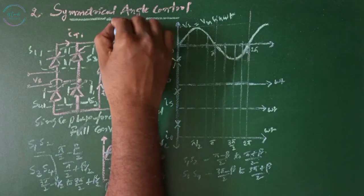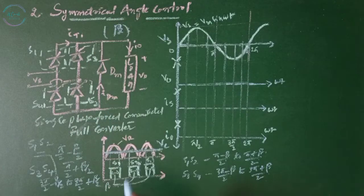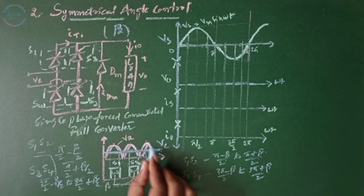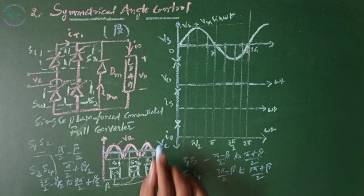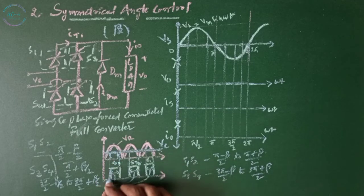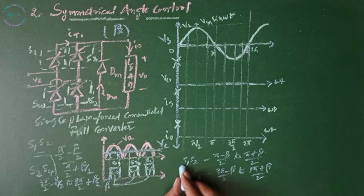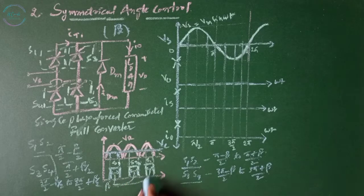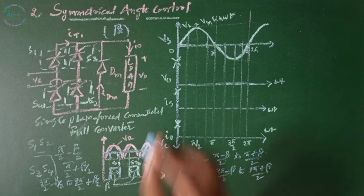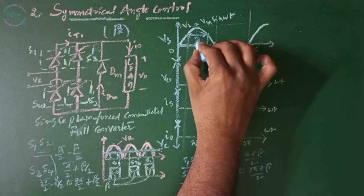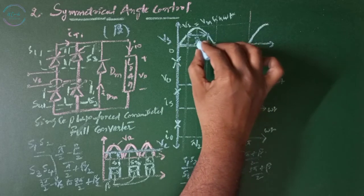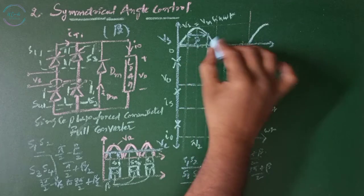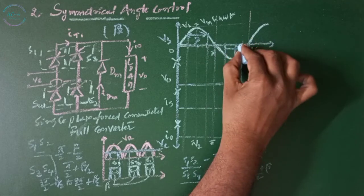Here beta is the conduction angle. The half sine wave has a DC component of Vc. The signal is generated over this period — this signal belongs to the positive half cycle, that is S1 and S2, and this signal belongs to the negative half cycle, that is S3 and S4, and then repeats for S1 and S2. The conduction interval spans from pi/2 minus beta/2 to pi/2 plus beta/2, giving a total conduction angle of beta.